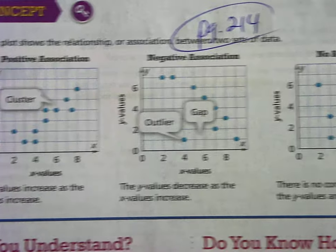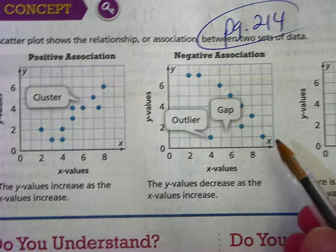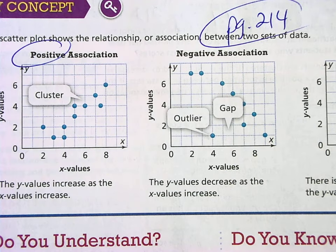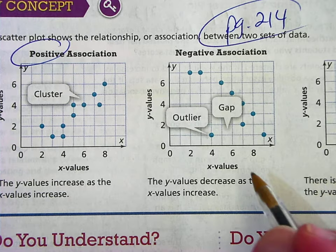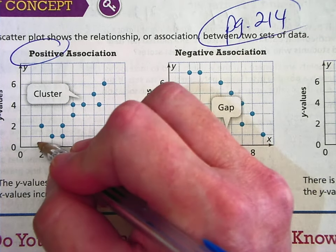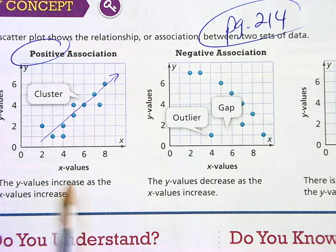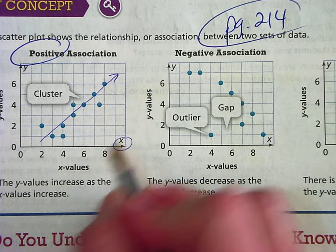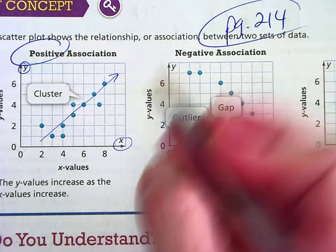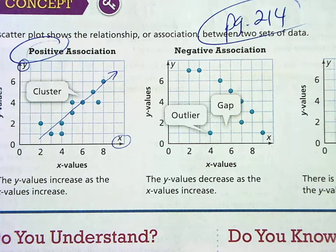Okay, so now I'm on page 214 at the very top. So there's three different types of association. The first one is a positive association. When your data is moving up from left to right, the X values are increasing and the Y values are increasing. We call that a positive association.